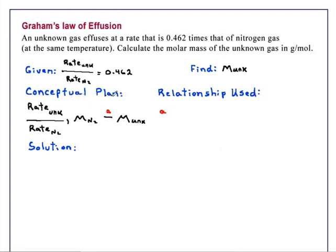So in our conceptual plan, we will take this ratio of rates and the known molar mass of nitrogen that we can calculate from the periodic table, and we have a simple relationship that will allow us to calculate the molar mass of the unknown.